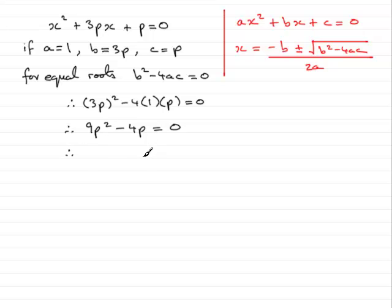Factorize this quadratic equation by pulling out p as a common factor, and you've got p times 9p minus 4, and that equals 0.